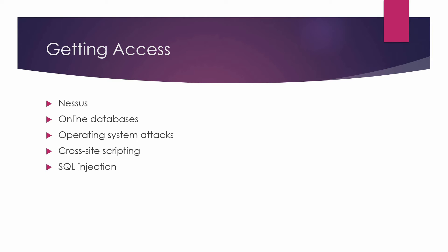Getting access. An attacker can use tools like Nessus to determine the specific vulnerabilities on each port. Then the attacker can go to an online database and find out which vulnerabilities are still out there which are associated to your port and then take advantage of those security holes. This can include direct application or operating system attacks, cross-site scripting, running simple scripts, or even SQL injection.